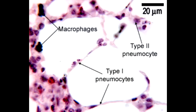What are type 1 pneumocytes? These are squamous cells that line the alveoli and make up 97% of the alveolar surface. Since they are squamous cells, they are thin for optimal gas diffusion.